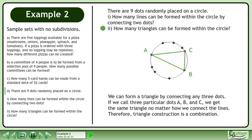We can form a triangle by connecting any three dots. If we call three particular dots A, B, and C, we get the same triangle no matter how we connect the lines. Therefore, triangle construction is a combination.